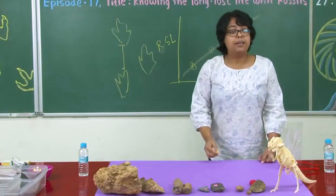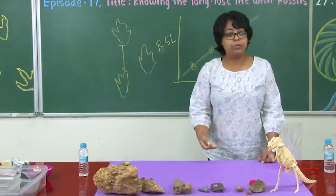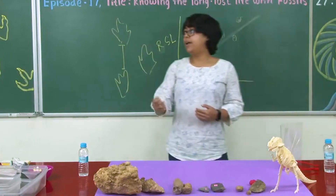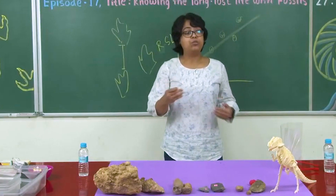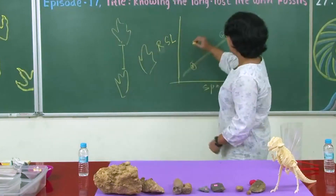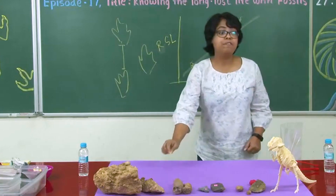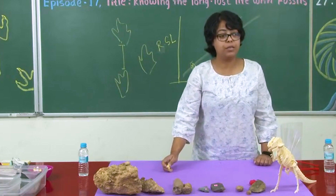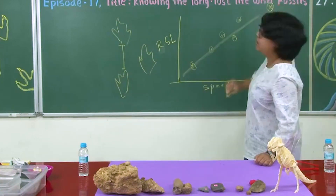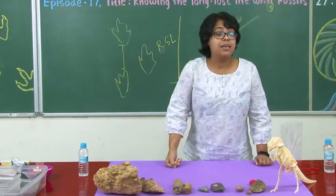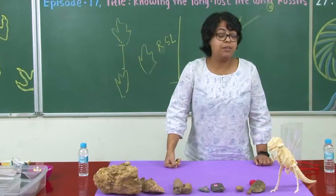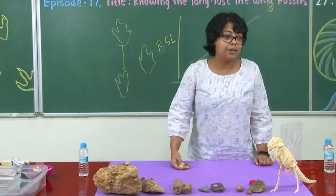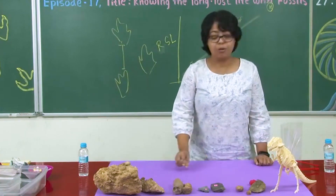We can then calculate the relative stride length from the trackways of a dinosaur and try to estimate its speed. As it turns out, if you look at the relative stride length from a dinosaur's trackway, it actually plots in a region that indicates very, very high speed. In fact, some of the trackways give you a speed of 12 meters per second, which is almost similar to an Olympic medal winner in sprints.